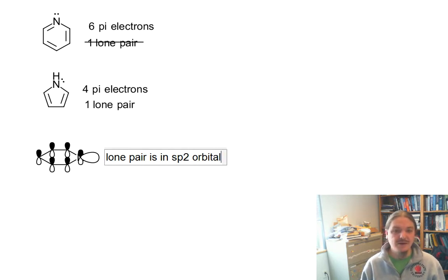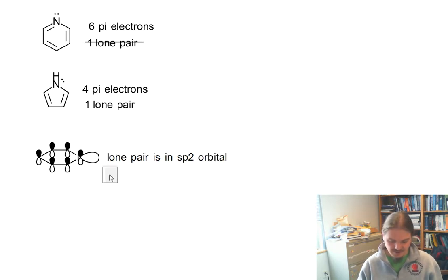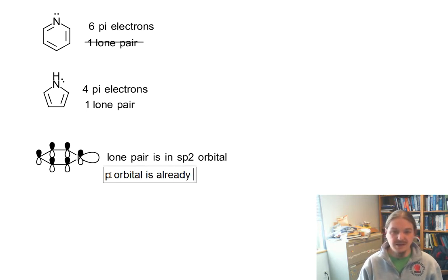The lone pair in pyridine is in the sp2 orbital. The p-orbital is already in the pi system. It's already being shared by the other carbon atoms.